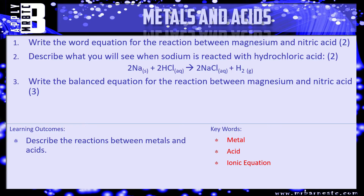Let's have a go at some practice questions. Number one: write the word equation for the reaction between magnesium and nitric acid. Number two: describe what you will see when sodium is reacted with hydrochloric acid — look at the state symbols; what have you got on the left? Solid and aqueous. What have you got on the right? Aqueous and gas. Number three — this is really for higher students — write the balanced equation for the reaction between magnesium and nitric acid. Have a go, and we'll see how you've done in a minute.